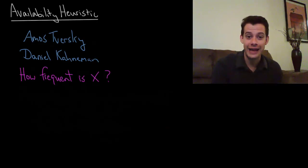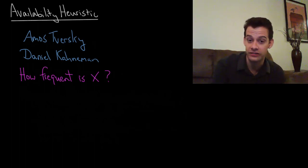Hi, I'm Michael Corayer and this is Psych Exam Review. In this video and the next few videos we're going to look at some examples of heuristics. Heuristics are these mental shortcuts that we use when we're solving problems and making decisions.